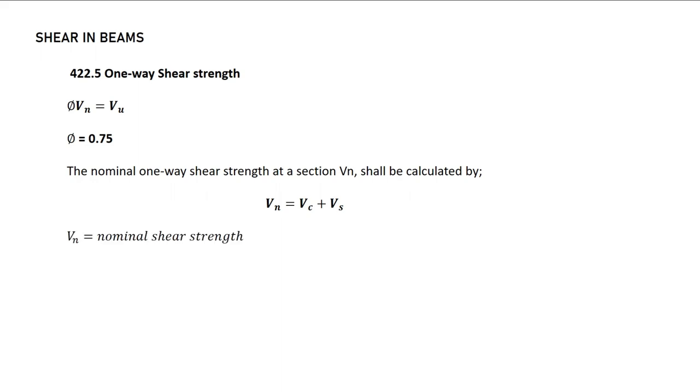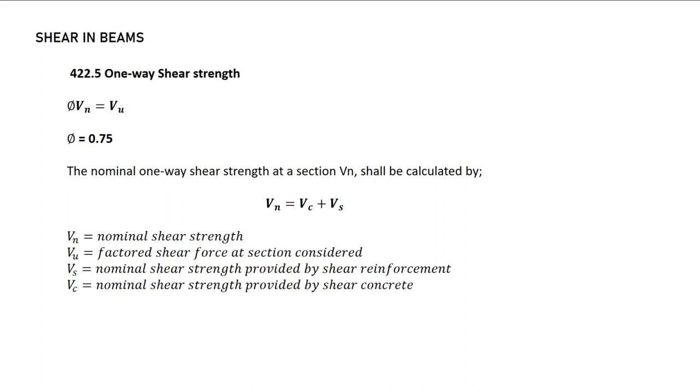VN is the nominal shear strength. VU is the factor shear force at section considered. VS is the nominal shear strength provided by the shear reinforcement or stirrups. VC is the nominal shear strength provided by the shear concrete.